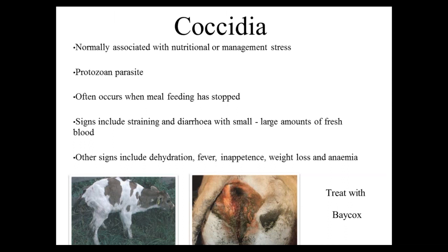It often occurs when meal feeding has stopped, because a lot of meals contain a product called a coccidiostat, which is preventative against coccidia — it kills off the coccidia before they can burrow into the intestinal cells. We quite often see it in animals that have been weaned off onto pasture, normally about two to three weeks after weaning.